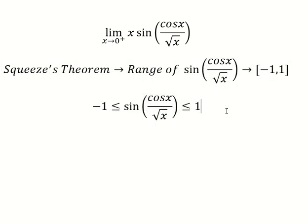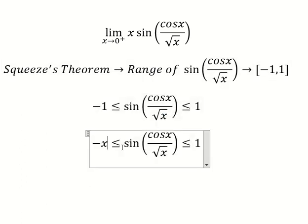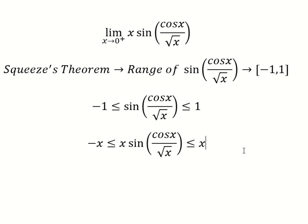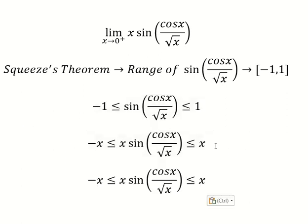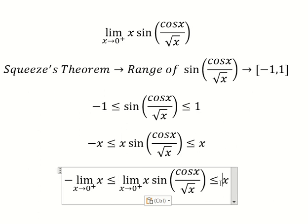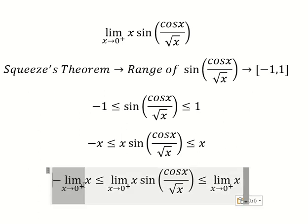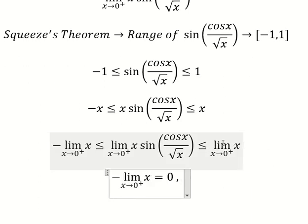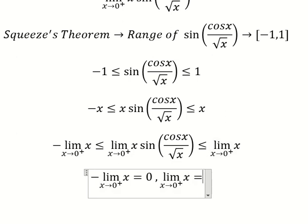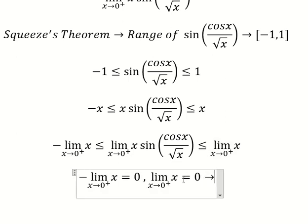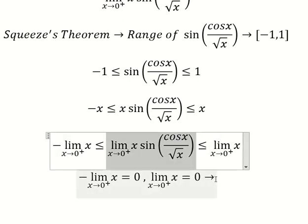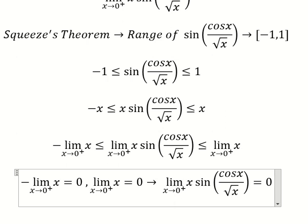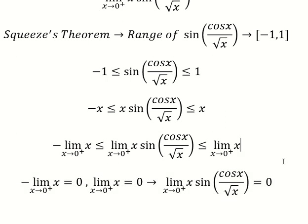Next, we multiply by the same expression on both sides, then we can put the limit in here. This side gives us zero and this side gives us zero, so that means this one should be equal to zero, and that is the answer.